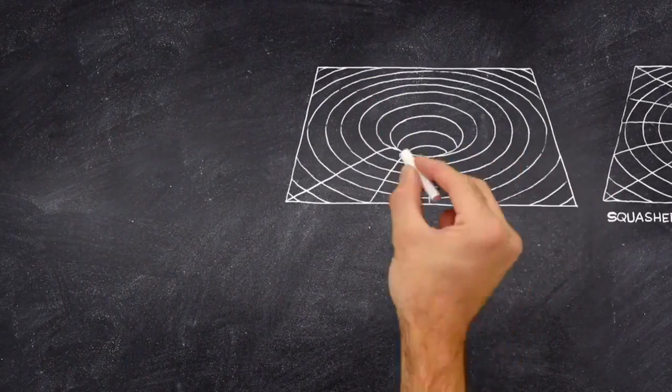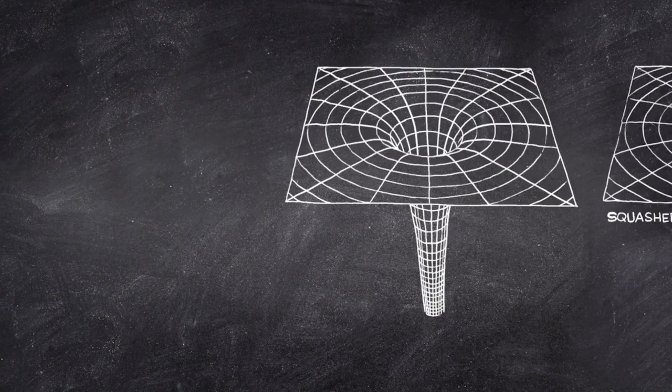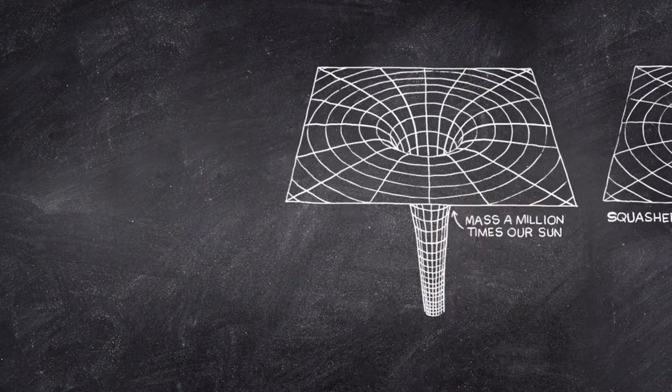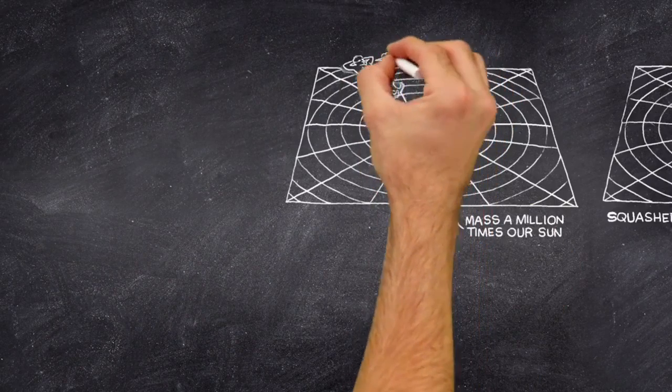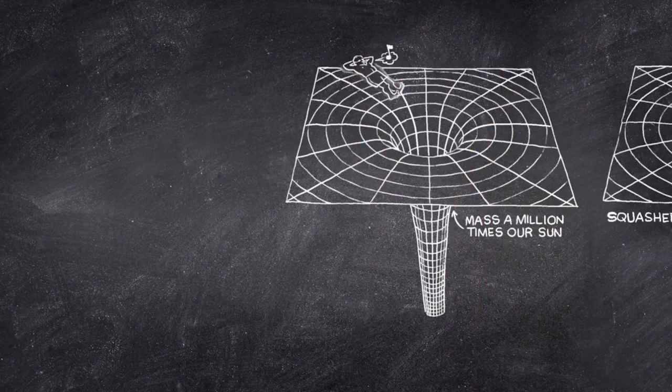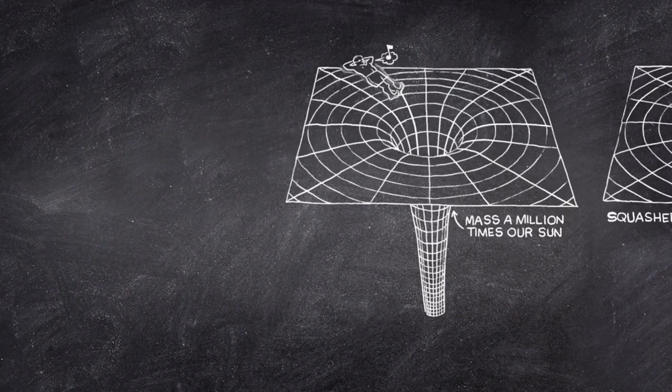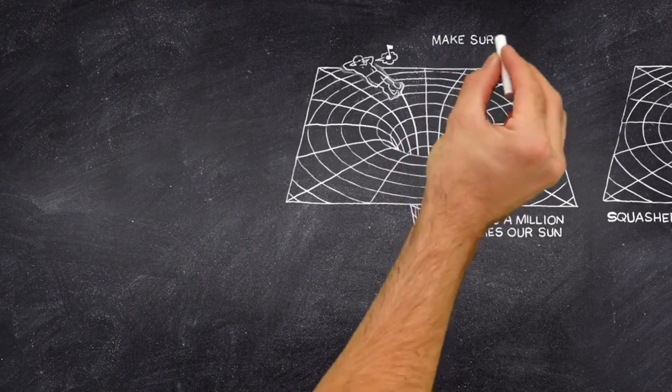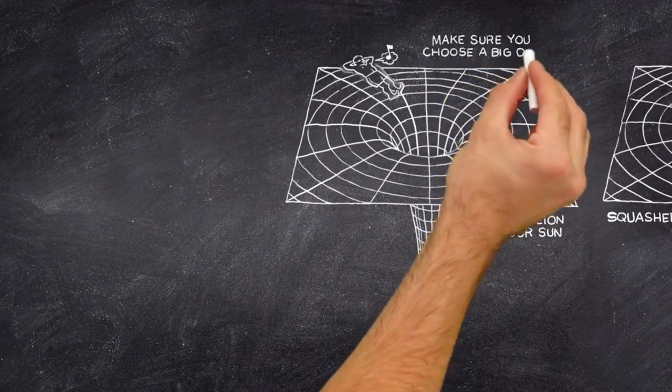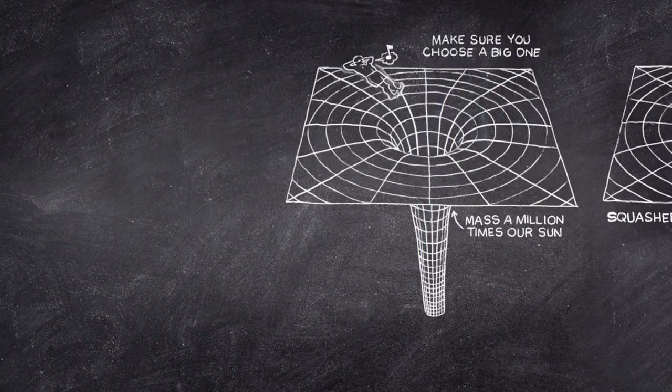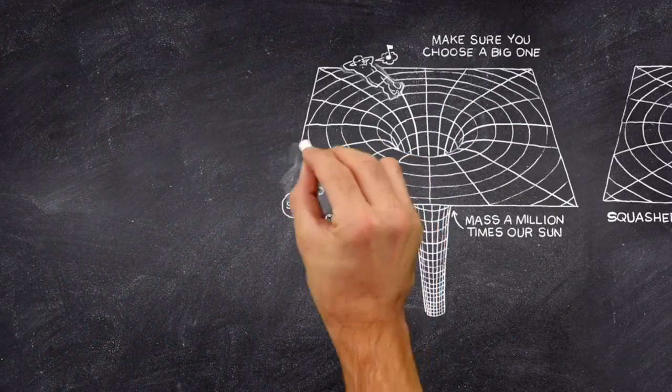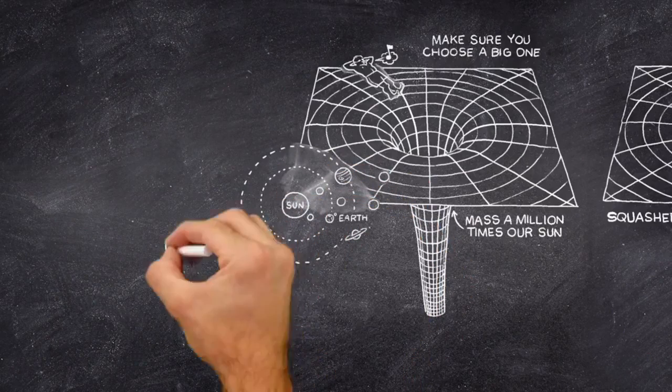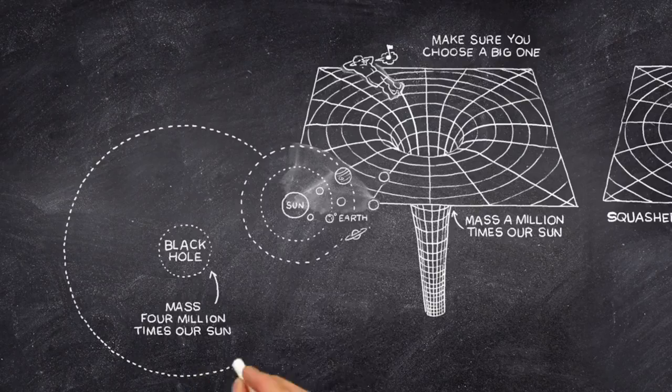However, if you fell into a much larger black hole, with a mass of a million times the sun, you would reach the horizon without difficulty. So, if you want to explore the inside of a black hole, make sure you choose a big one. There is a black hole with a mass of about four million times that of the sun at the center of our Milky Way galaxy.